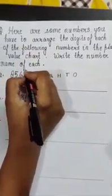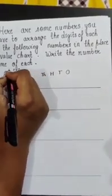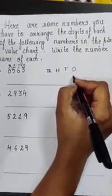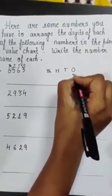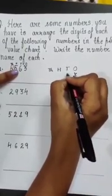It will be easy for you if you write it like this. You will start from here: ones, tens, hundreds, and thousands. Now which digit is at ones place? Yes, 3. Which digit is at tens place? Yes, it's 6.